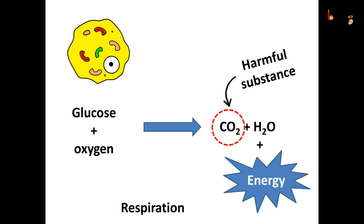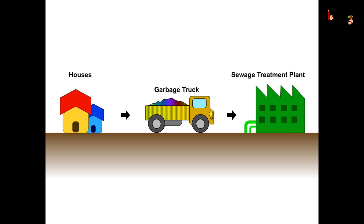Not just for this — respiration and many other activities occur in the cells and other organs, and many harmful substances are produced in these processes. For example, carbon dioxide. What if these harmful things stayed inside the cells and other organs? Obviously it would be very harmful to our body. So again, a transport system is required to take these harmful substances to the proper place.